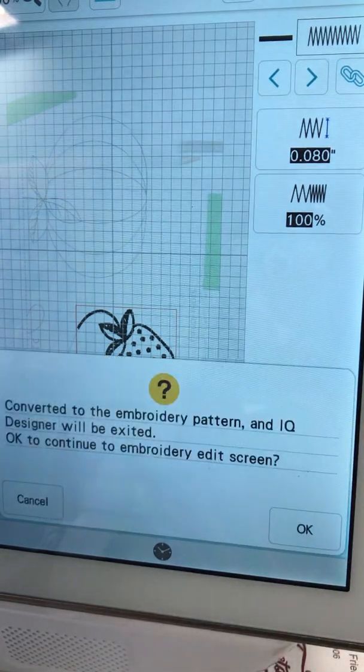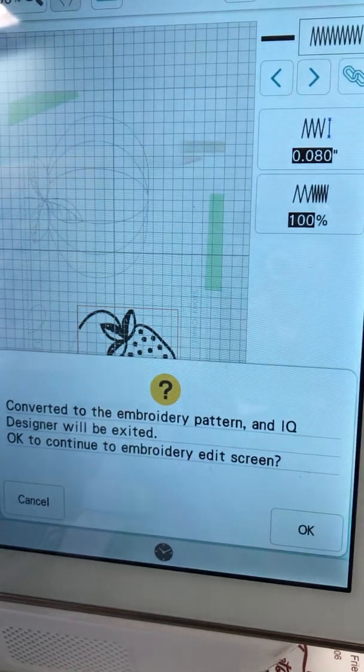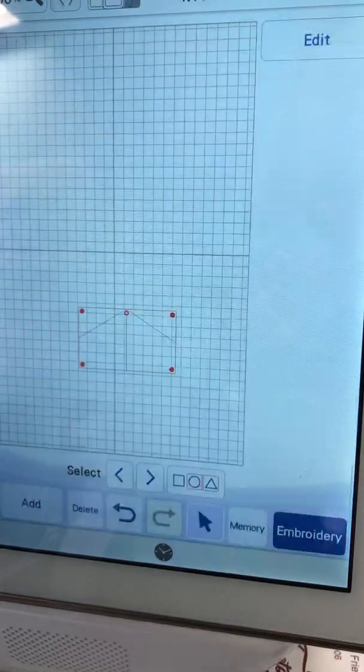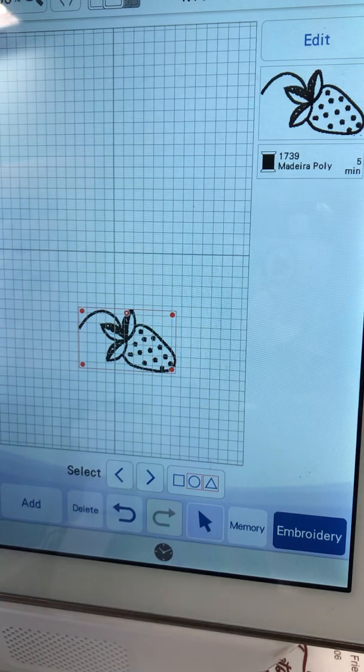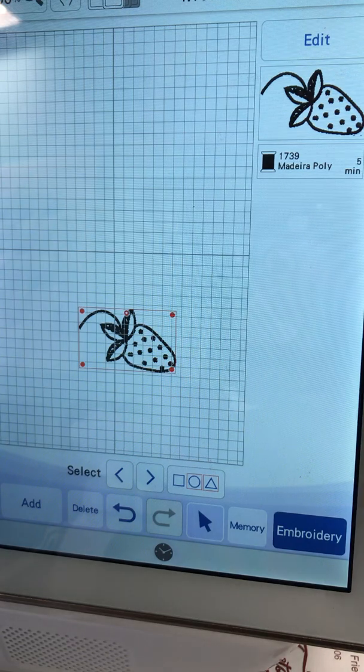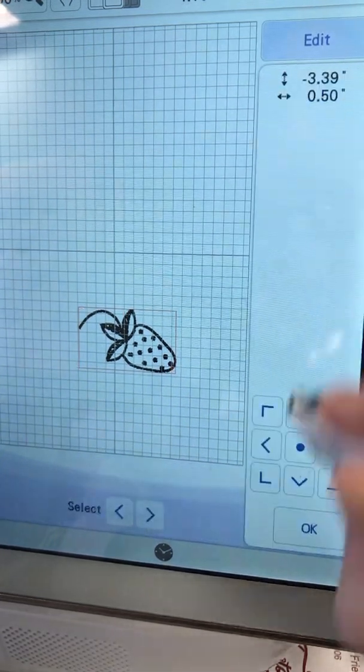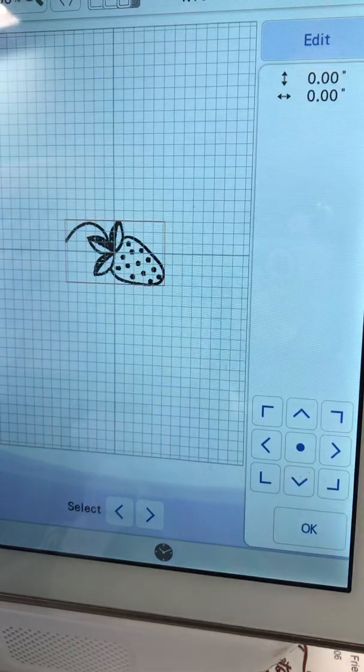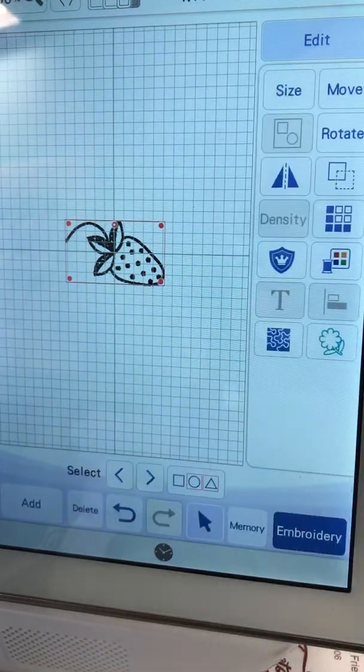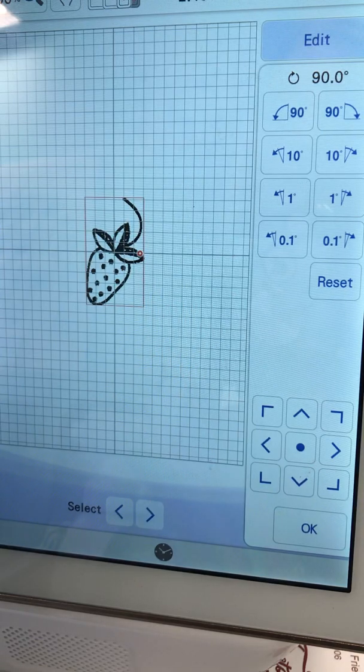Now I'm ready to set it. It's going to ask me if I'm really ready to set it. It needs to make sure because once I hit okay on this, I can't go back. I'm going to hit okay. Now I can manipulate this where I want it on my hoop. I'm going to move it to the center and rotate it that way.